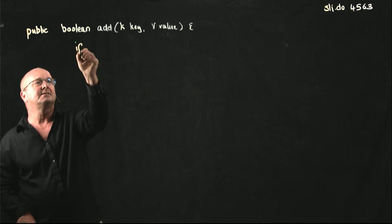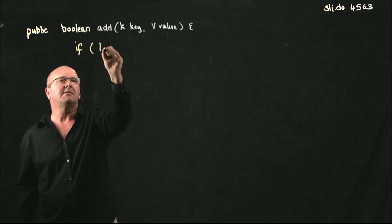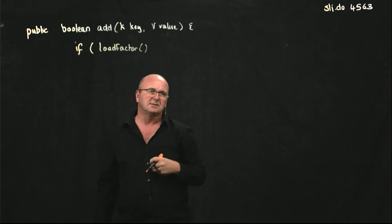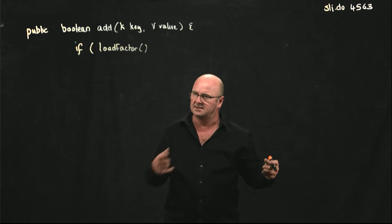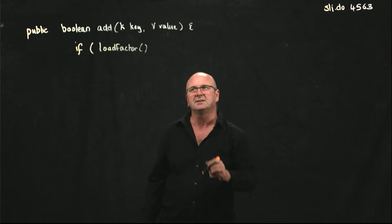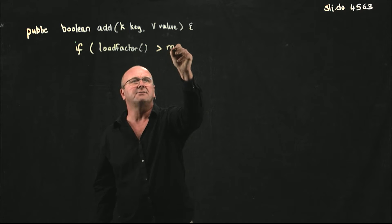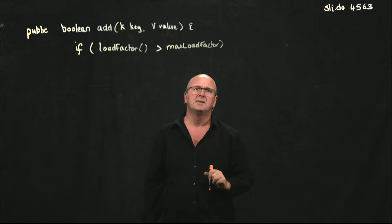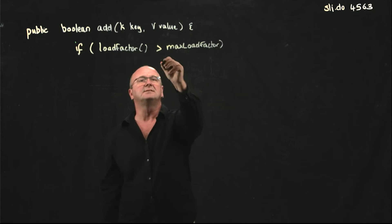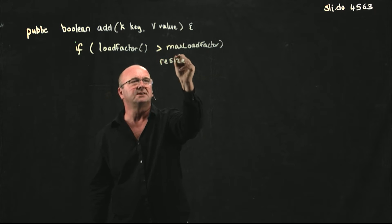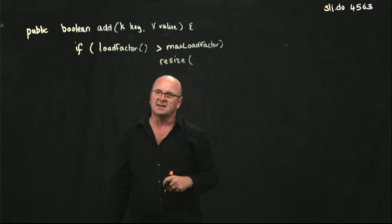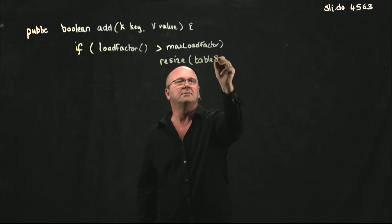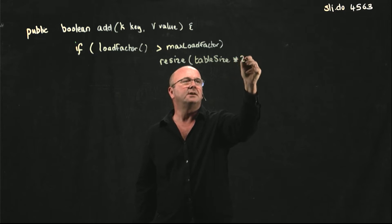And so all we have to say here to test if we're going to resize is if our current load factor, and load factor, remember, is just the number of elements divided by the table size. And so we can just have a simple method that returns that. If our current load factor is greater than max load factor, and max load factor was a globally scoped variable we set, then we're going to resize. And the way we'll resize is we'll just call our resize method. And our resize will take a new size of our table, and we'll just double our current table size.